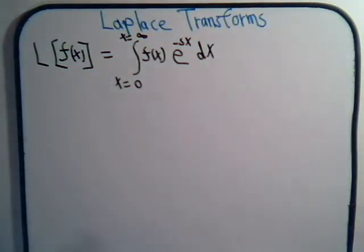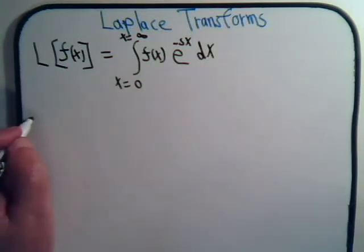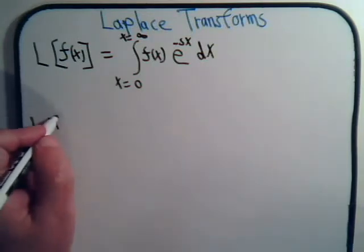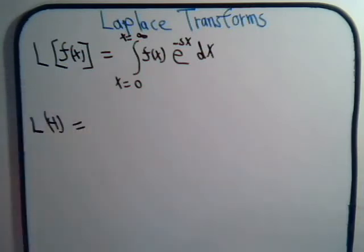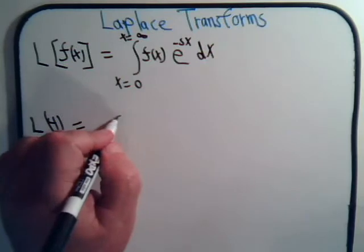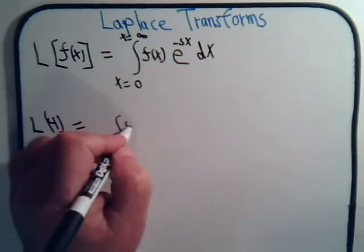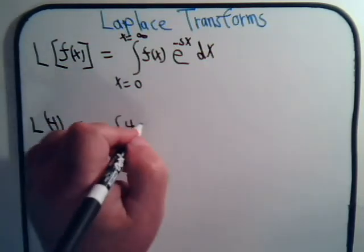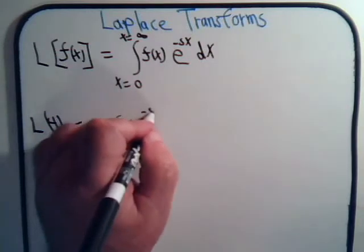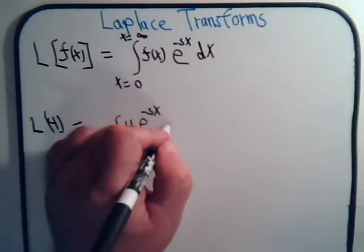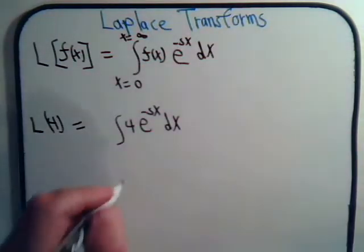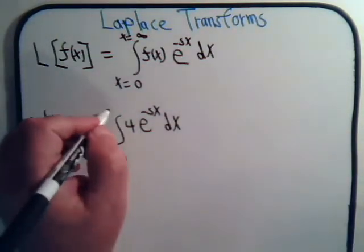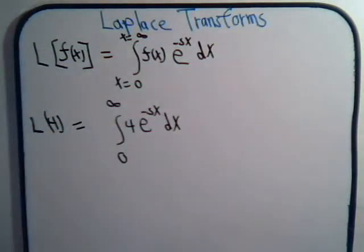Let's start with something simple. Suppose we're going to take the Laplace Transform of just the number 4. Well, let's use our definition. That would be the integral of 4 times e to the minus sx dx, where s is just a variable, and x goes from 0 to infinity.